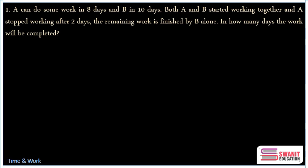In this question, A leaves the work after working for some days. Like in the previous video, I'll be discussing this question with both methods — the traditional school method and the total work method. For more details on the total work method, you can watch my Part 1 video. A can do the work in 8 days and B can finish it alone in 10 days.